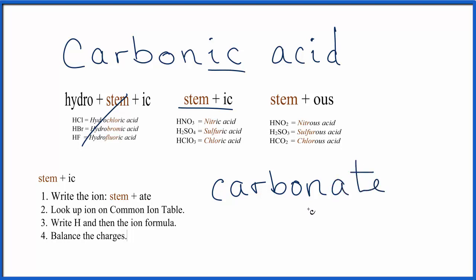That means we have the carbonate polyatomic ion. And we can go to the common ion table and look that up. When we do, we see that carbonate is C-O-3-2-.